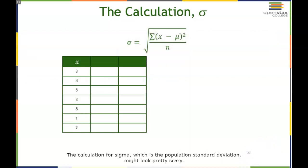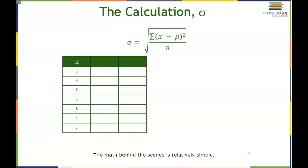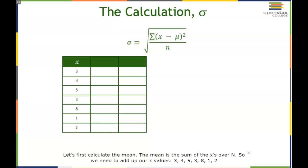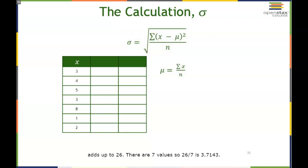The formula for sigma, the population standard deviation, might look scary, but the math is relatively simple. Sigma equals the square root of the sum of (X minus mu) squared, divided by n. We need mu, n, and the X values. First calculate the mean: sum the X values — 3, 4, 5, 3, 8, 1, 2 — which adds up to 26. There are 7 values, so 26 divided by 7 is 3.7143.